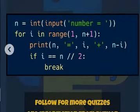Print n comma, so what is in here? 10. So 10 comma is equal to i is 1 comma plus n minus i. n is 10, 10 minus 1 is 9. So 1 plus 9.